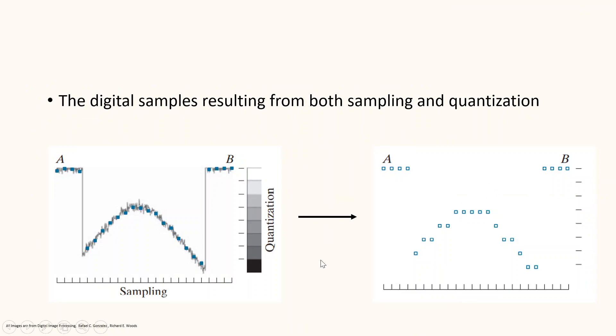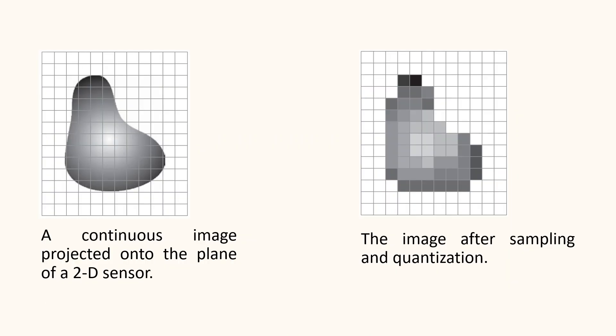The digital samples resulting from sampling and quantization are shown with the white squares here. These squares are the digital samples resulting from sampling and quantization. Starting from the top of the image and moving line by line downwards, we get a two-dimensional digital image. This figure illustrates a continuous image projected onto the plane of a 2D sensor, and the right-hand side image shows the result after sampling and quantization. To conclude, in this session we learned the process of sampling and quantization to obtain a digital image.